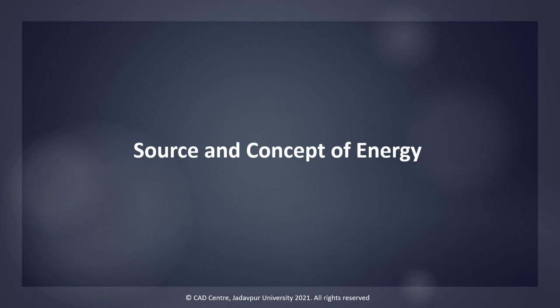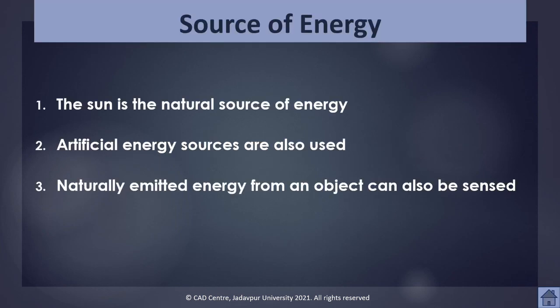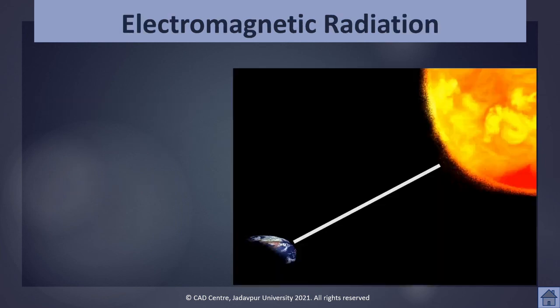Electromagnetic radiation is a form of energy. The sun is the natural source of energy; we can also use artificial energy sources, and naturally emitted energy from an object can also be used in remote sensing. Energy is the ability to do some work. In the process of doing work, energy is often transferred from one body to another or from one place to another.